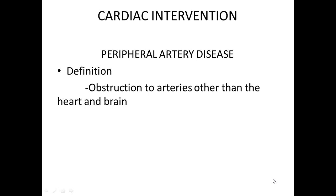Peripheral artery disease is blockage or obstruction to arteries other than those in the heart and the brain. Obstruction to blood vessels in the brain we call a stroke or CVA. Obstruction to blood vessels in the heart we regard as chest pain, angina, or heart attack. But the same process that goes on in the blood vessels of the brain and heart can occur elsewhere, and we have to address that as well.